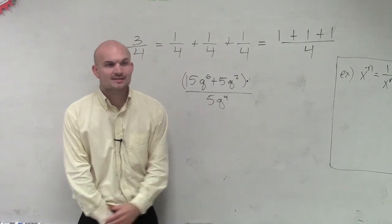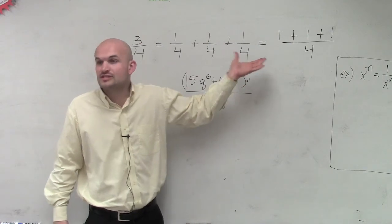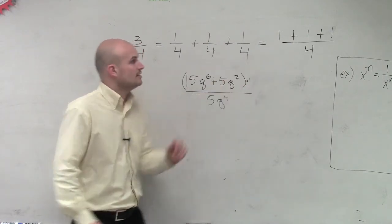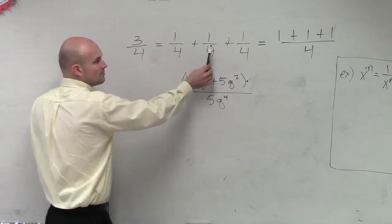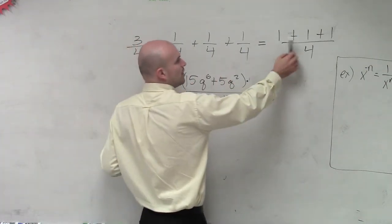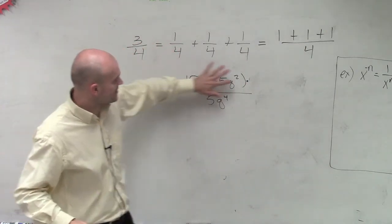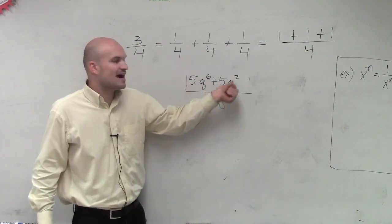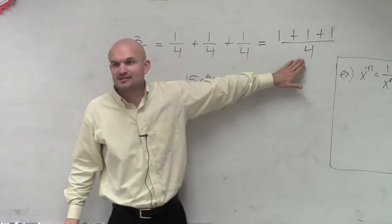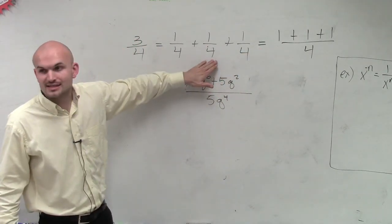And what I want you guys to understand, the reason why I wrote up these fractions, is I want you to understand, John, there's different methods that go through this. We can take a fraction 3 fourths and break it up into 1 fourth plus 1 fourth plus 1 fourth. And we can break it up into 1 plus 1 plus 1 over 4. And what you guys notice is if I kind of get rid of these parentheses now, 15q to the 6 plus 5q squared is kind of like this form, which what I can do is I can now break this up into this format.